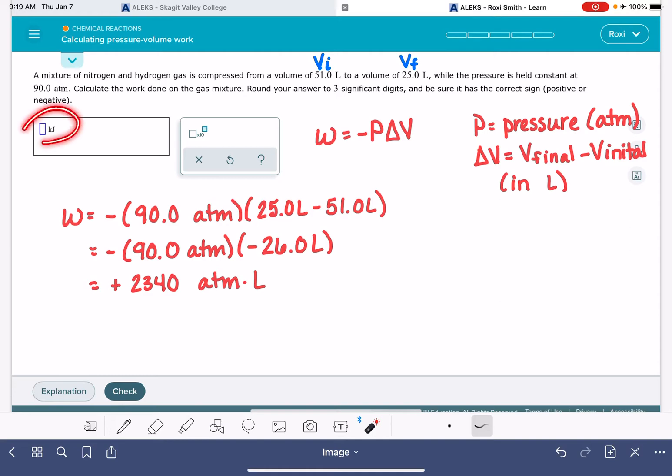The problem tells us that it wants the answers in units of kilojoules, which means we need to do a conversion between this liter atmosphere unit and joules or kilojoules. The conversion factor that we have is one liter atmosphere equals 101.325 joules. So I'm going to use this conversion factor to convert my units into joules, and then I will convert my joules into kilojoules.